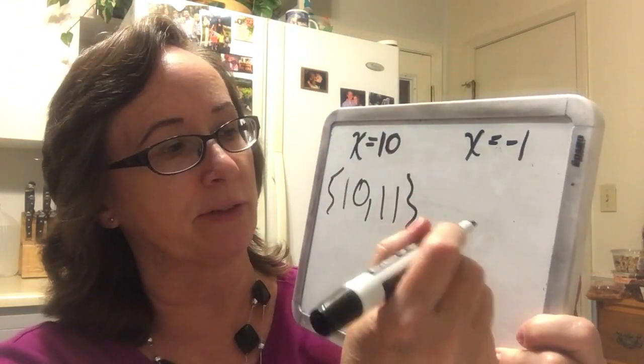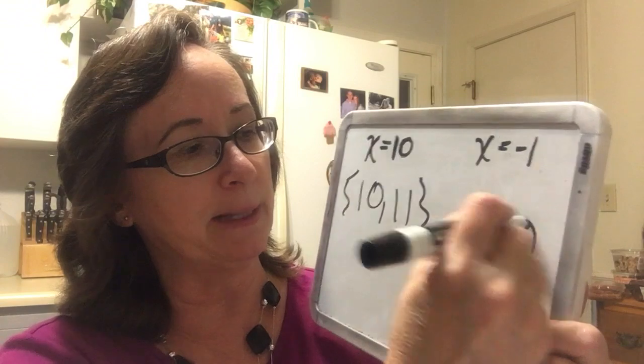And remember, integers are allowed to be negative. So negative 1, and then one more would be 0, and that's another set.